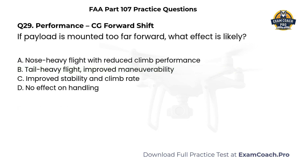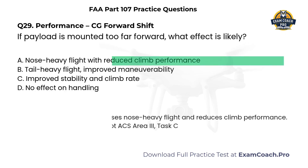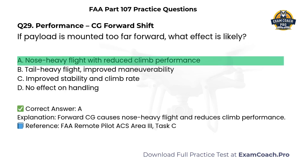Performance. CG forward shift. If payload is mounted too far forward, what effect is likely? A. Nose-heavy flight with reduced climb performance. B. Tail-heavy flight, improved maneuverability. C. Improved stability and climb rate. D. No effect on handling. Correct answer: A. A forward center of gravity causes nose-heavy flight and reduces climb performance.